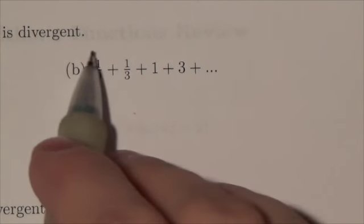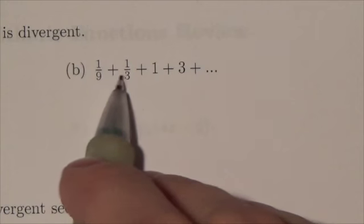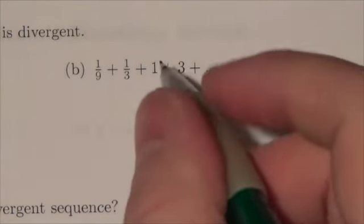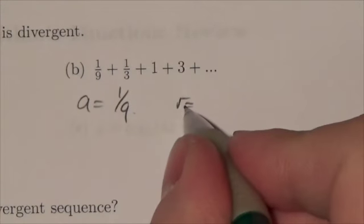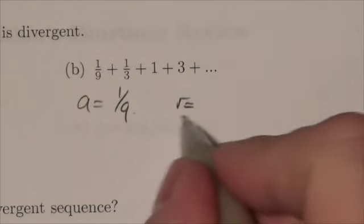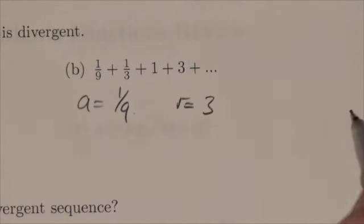So in this case right here, we're starting at 1/9, then we go to 1/3, then to 1. It should be pretty clear here that our a value is 1/9, but more importantly that our r value, because this is a geometric sequence, our r value is taking on the value of 3.